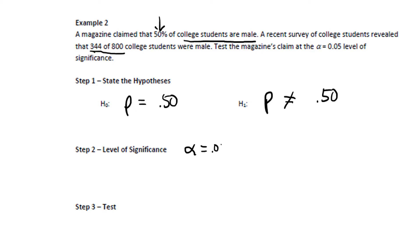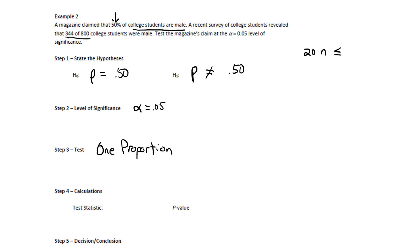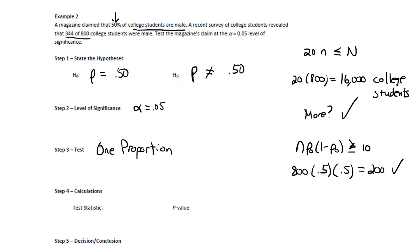The level of significance is 0.05. The test appears to be one proportion, so let's check the conditions. First, 20 times 800 is 16,000 college students. Since the problem refers to college students in general — not one particular college — there are definitely more than 16,000, so that condition is met. Next, n times p sub 0 times 1 minus p sub 0 equals 800 times 0.5 times 0.5, which gives 200 — definitely larger than 10. The conditions are met, and we can go to StatCrunch for the calculations.